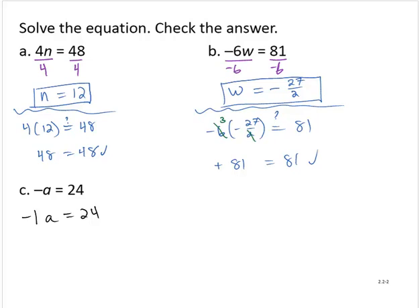Again, I see the variable term isolated. And so now I will isolate the variable through division. I will divide both sides of the equation by negative 1.